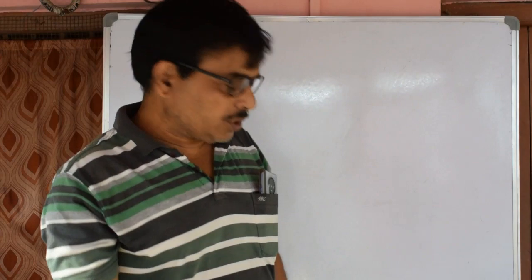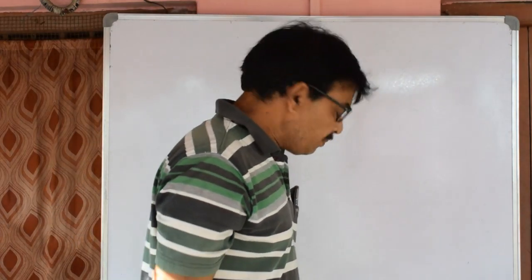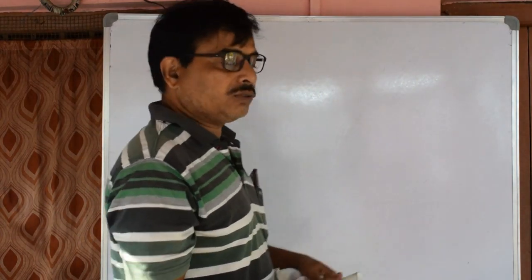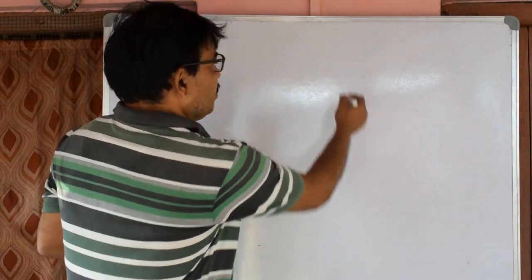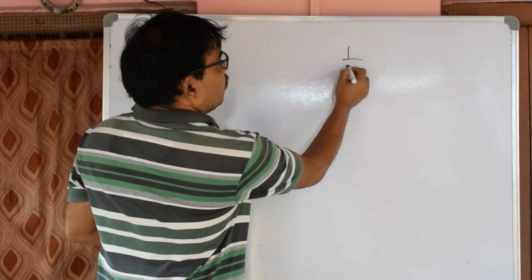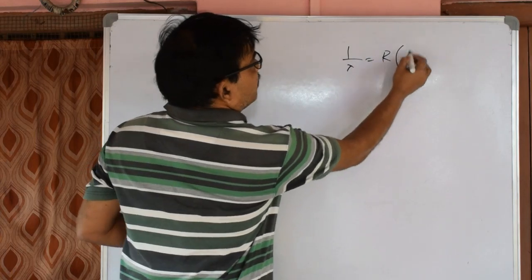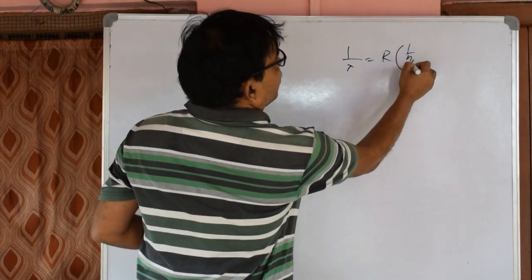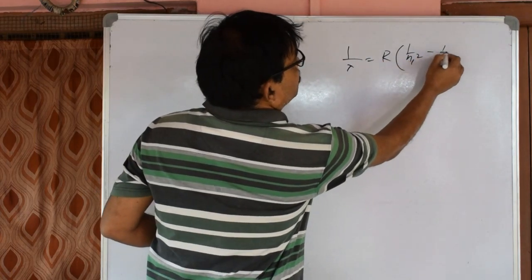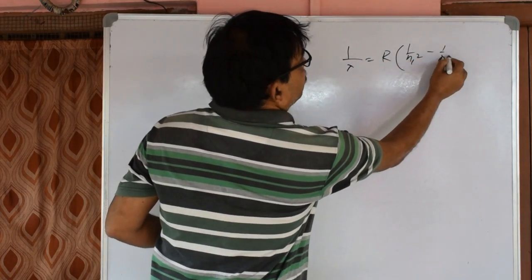In Part 3, I started the first topic about the hydrogen Bohr model. The formula is: 1 over lambda equals R times 1 over n1 squared minus 1 over n2 squared.